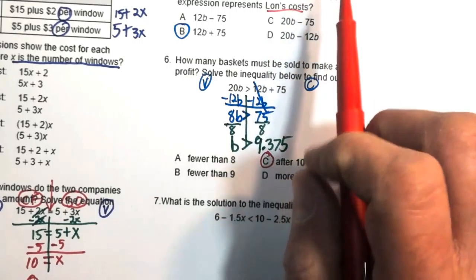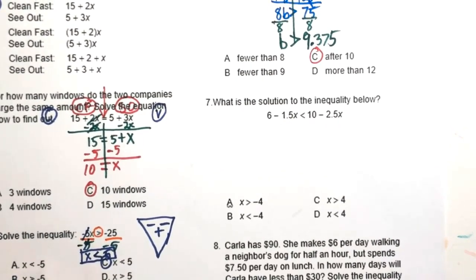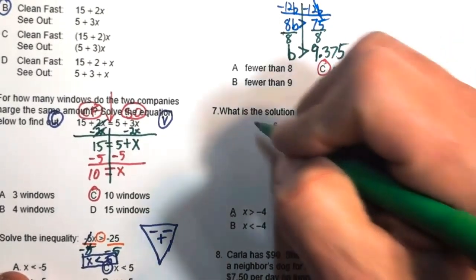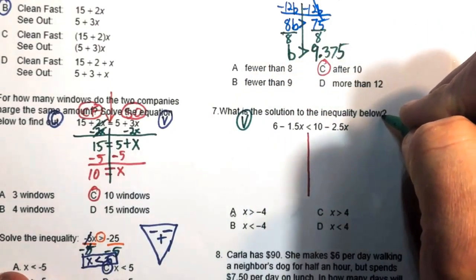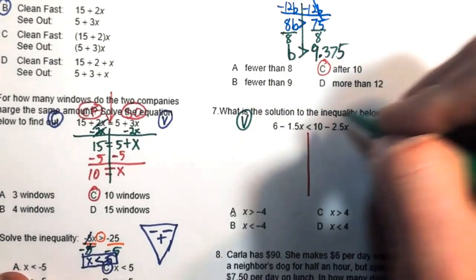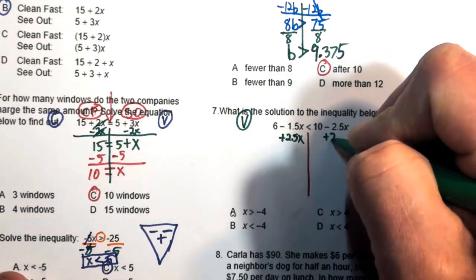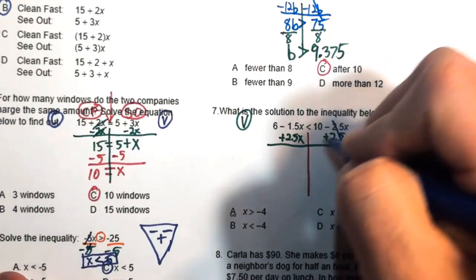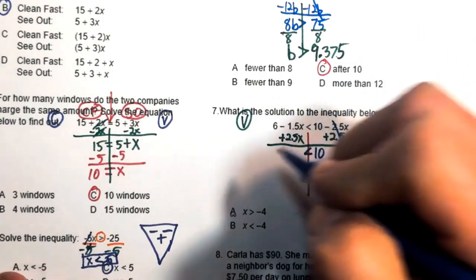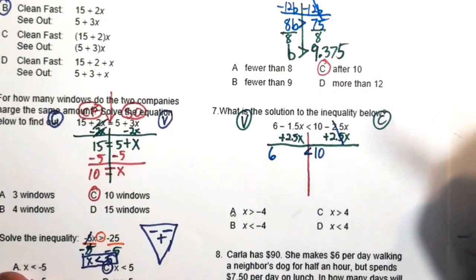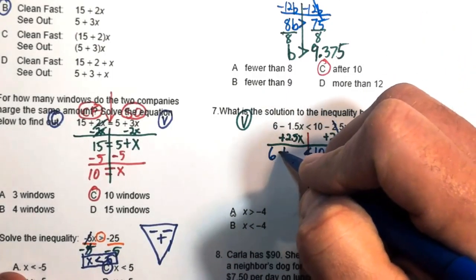Number seven: solve the inequality. I'll draw a line down and choose the left side for variables and constants. Since negative 2.5 is bigger than 1.5, moving it over gives a positive number. Add 2.5x to both sides — that cancels the 2.5x on the right. Zero plus 10 is 10, bring down the inequality, bring down the 6, and negative 1.50 plus 2.50 equals 1, so we have plus x.